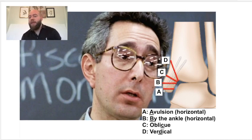And here you can see it's based on the obliquity and the level of the medial malleolus fracture. It's A, B, C, and D from distal to proximal. It's pretty simple, but I've made it even simpler by using this mnemonic.